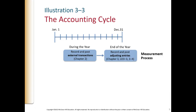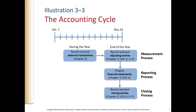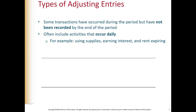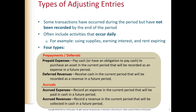Here we are at the end of the year, and we need to record and post what are called adjusting entries, and then we will use those to prepare the financial statements. We'll finish it out with a closing process. There are four types of adjusting entries. What they do is ensure all of the accounts are up to date as of the end of the year, and if they need to be adjusted, we make adjusting entries to bring them up to date so that we can prepare accurate financial statements.